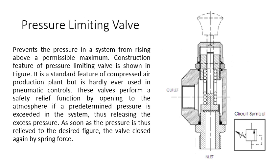The pressure limiting valve prevents pressure in a system from rising above a permissible maximum. The permissible maximum is set by the person who specifies what pressure is required. It will prevent the pressure from rising above that certain value. The construction and features of the limiting valve are shown in the figure. It is a standard feature of compressed air production plants but is hardly ever used in pneumatic controls. These valves perform a safety relief function by opening to the atmosphere if the predetermined pressure is exceeded.